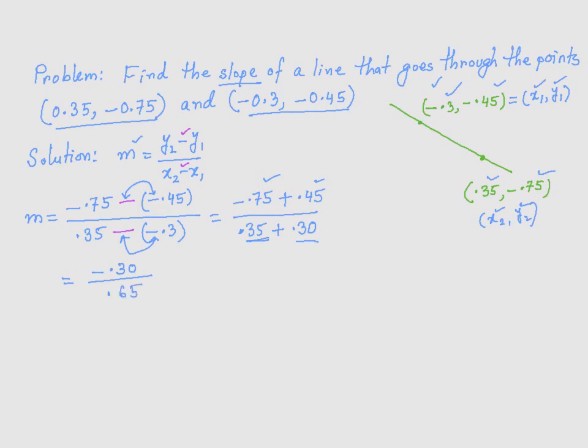Now note, in the numerator after the decimal you have two digits. In the denominator after the decimal you have two digits. So you can just get rid of the decimals and treat this thing as if you are dividing 30 by 65.